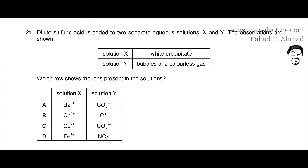Now, solution X - remember you're adding sulfuric acid, so let's write that down. You're adding sulfuric acid H2SO4 to the following solutions. So the first one, solution X, produces a white precipitate. Solution Y produces bubbles of a colorless gas.